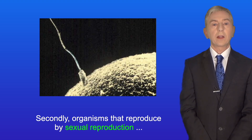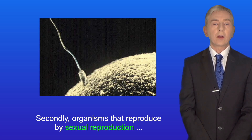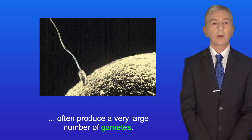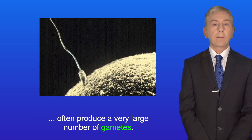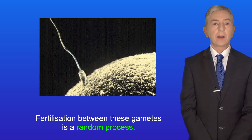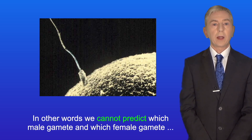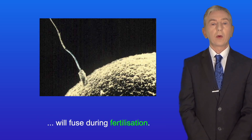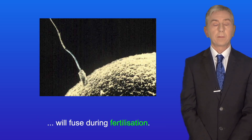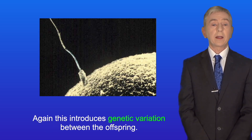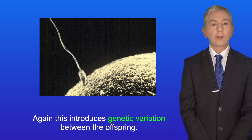Secondly, organisms that reproduce by sexual reproduction often produce a very large number of gametes. Fertilization between these gametes is a random process. In other words, we cannot predict which male gamete and which female gamete will fuse during fertilization. And again, this introduces genetic variation between the offspring.